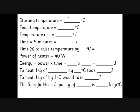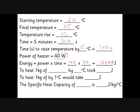Here are some possible example results. Suppose you had a block that started at 20 degrees C and ended at 35 degrees C, so the temperature rise is 15 degrees C. The time taken was five minutes, which we convert to 300 seconds. The power of the heater was 40 watts, and energy equals power times time, so 40 watts times 300 seconds gives 12,000 joules.